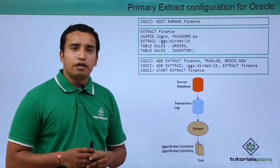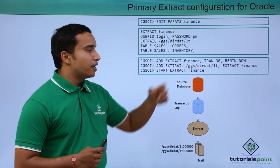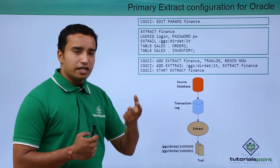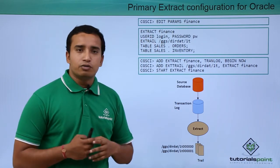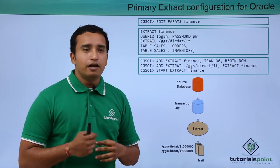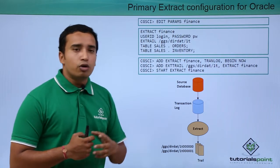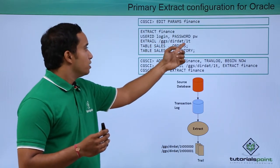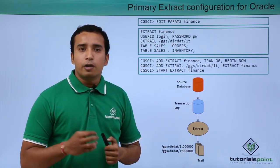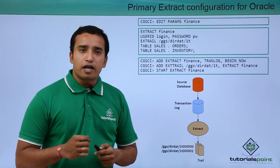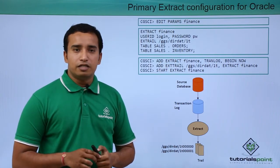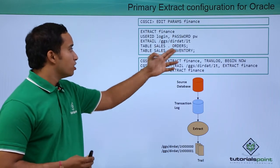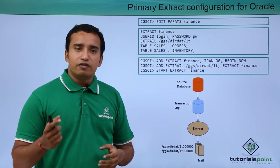Here is an example. If you want to create an extract with the name 'finance', you give the command 'edit params finance'. This creates an extract parameter file called finance. The parameters you pass are: first, 'extract' followed by the extract name; then the user ID and password — this is the GoldenGate user created at the database level. Then you give the local trail file location, which is in the GGS_DIR/DAT directory. Finally, you specify what you are capturing — two tables, orders and inventory, belonging to the sales user. So you are extracting only data related to those two tables and putting it into the local trail file.